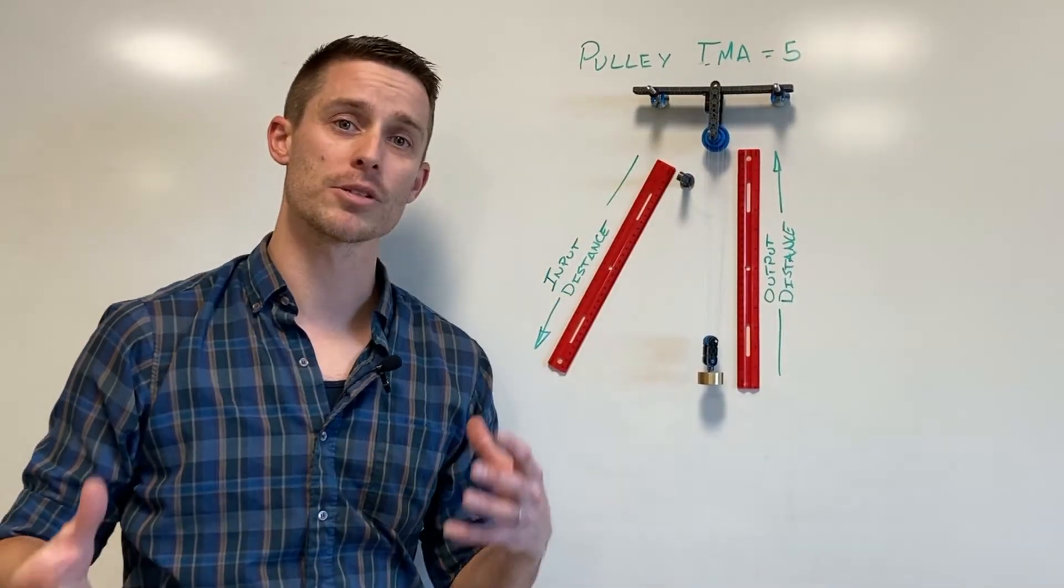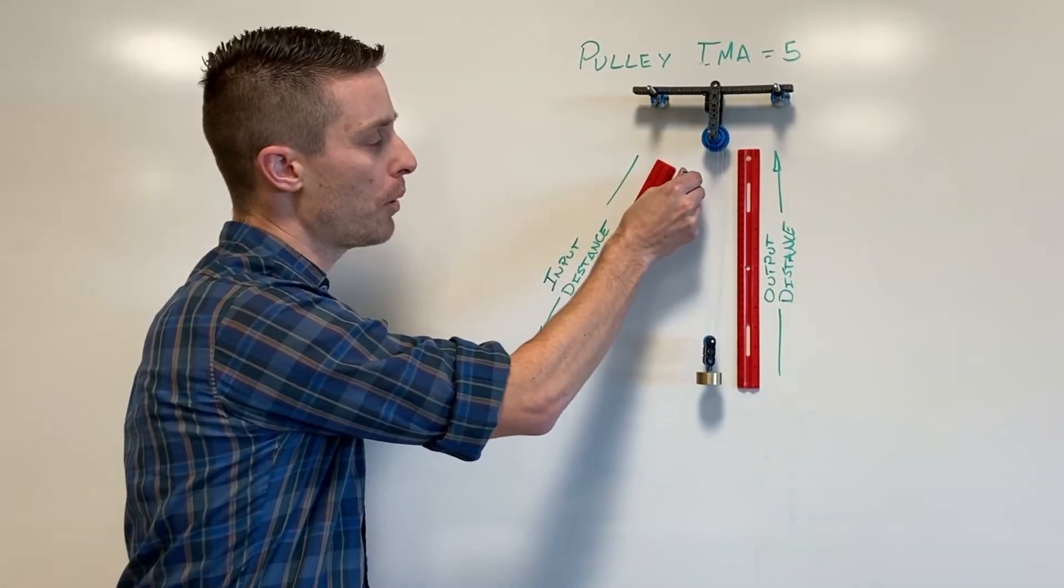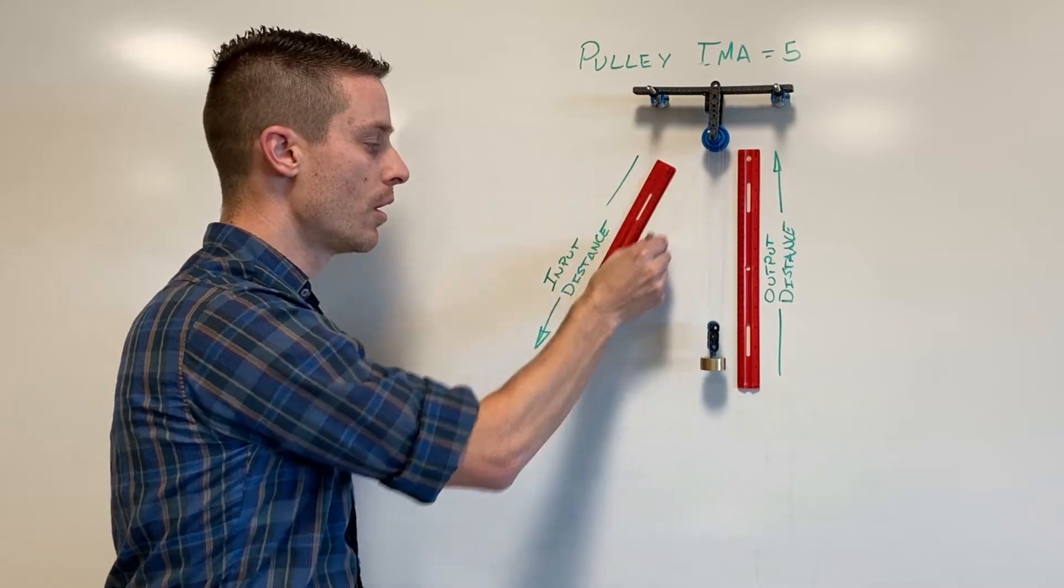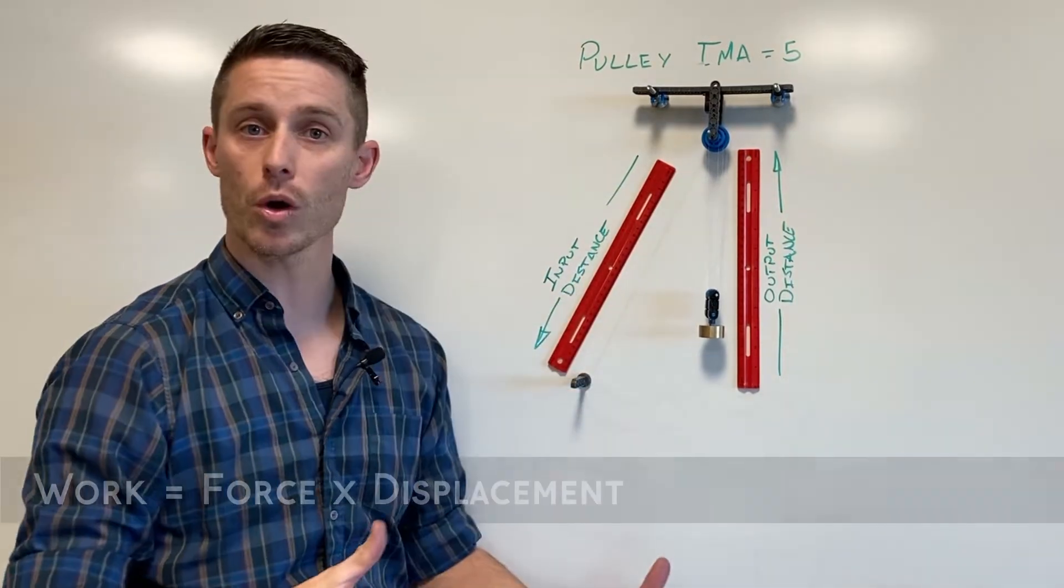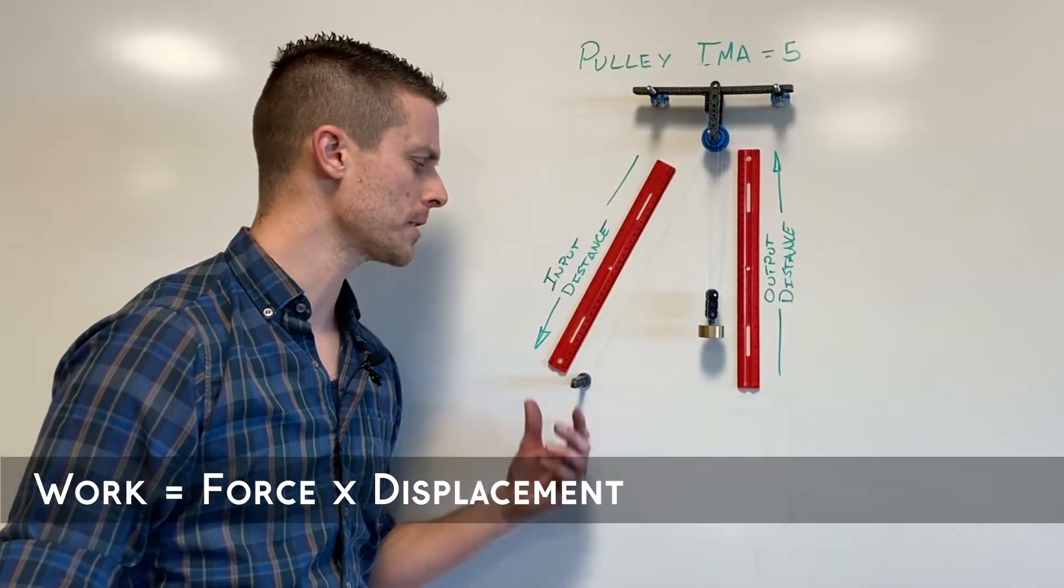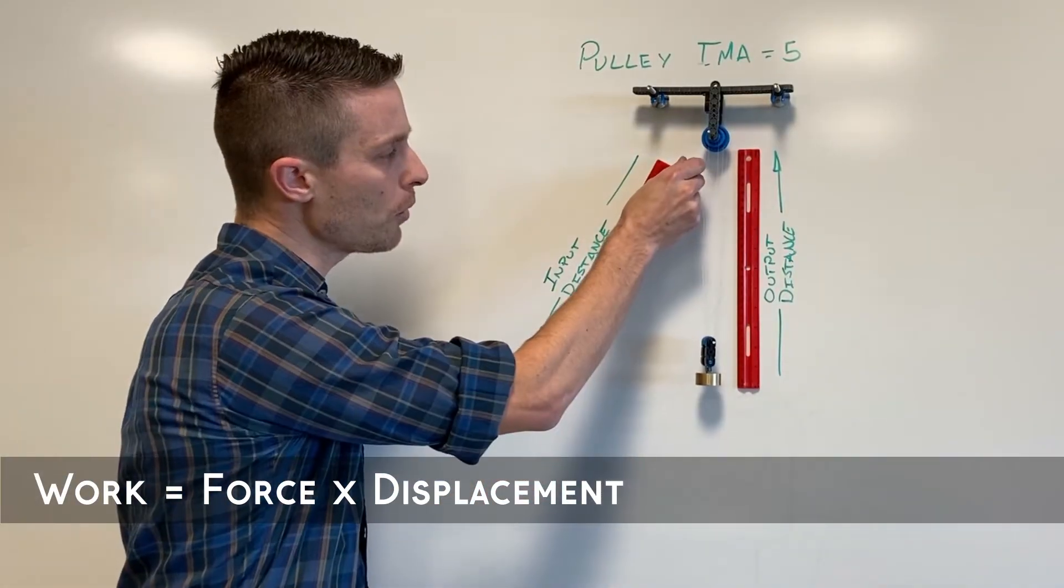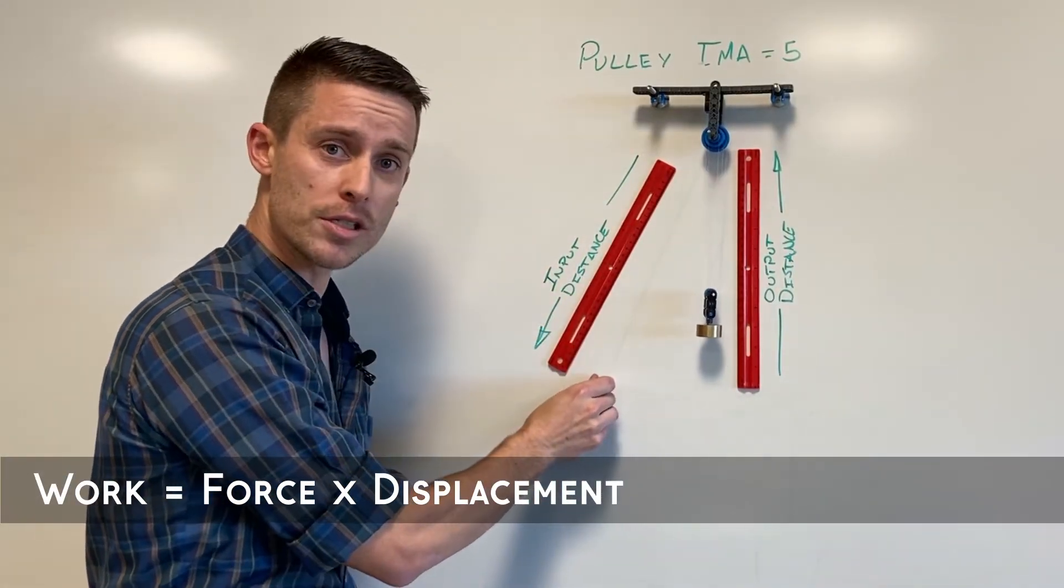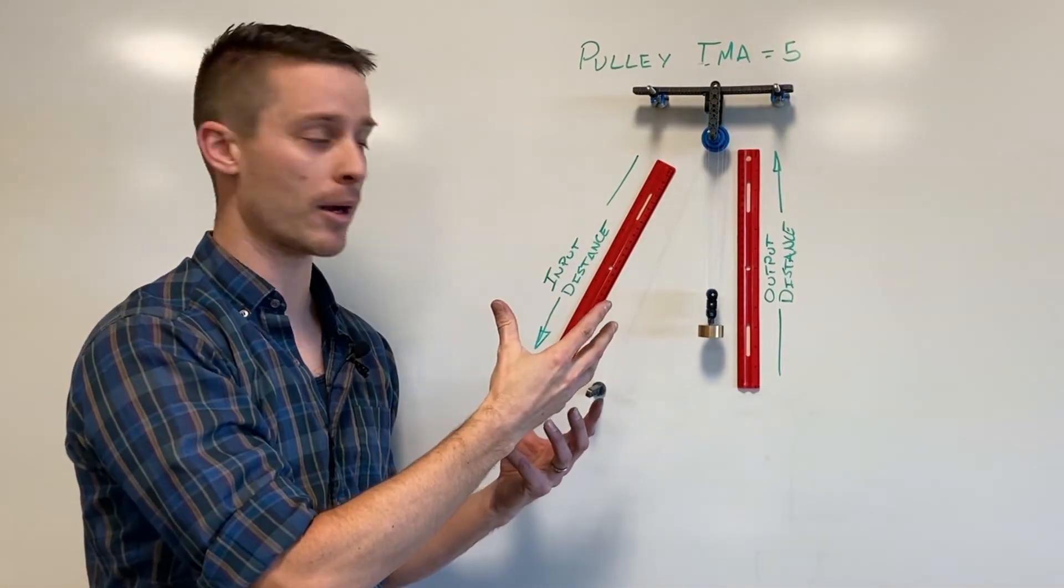Now if you want to talk about this in terms of physics if I was to pull with a force over a certain distance I would do work because work is given by force times distance or force times displacement and so if I pull with a small force over a large distance I've done a certain amount of work.